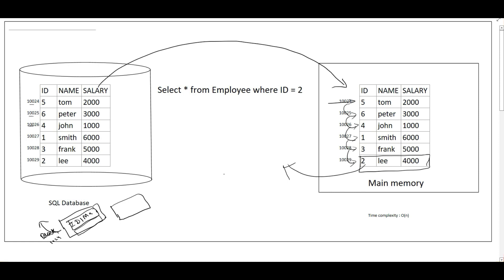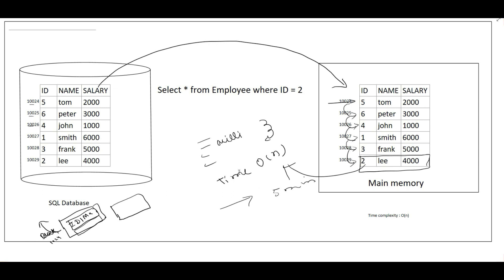Everything works fine for a small table, but suppose there are millions or billions of rows. A linear search has a time complexity of O(n), which is the worst case. It could take two to five minutes for bigger tables. This is the actual problem — how can we improve this search query for retrieving particular data from the database?